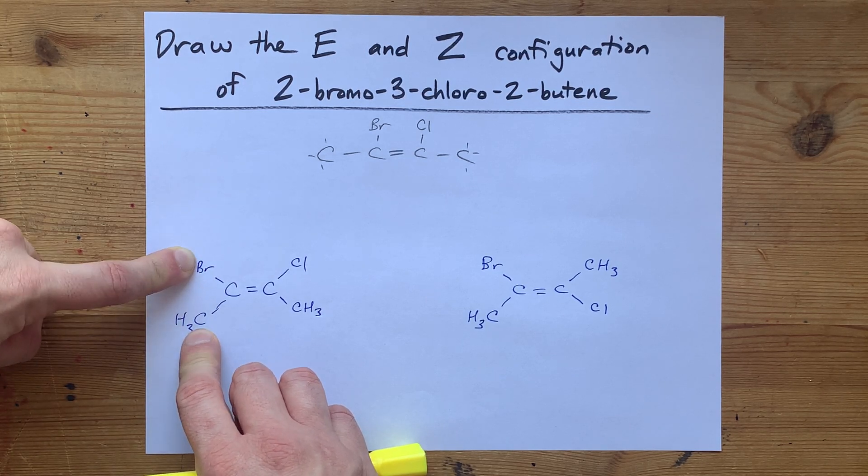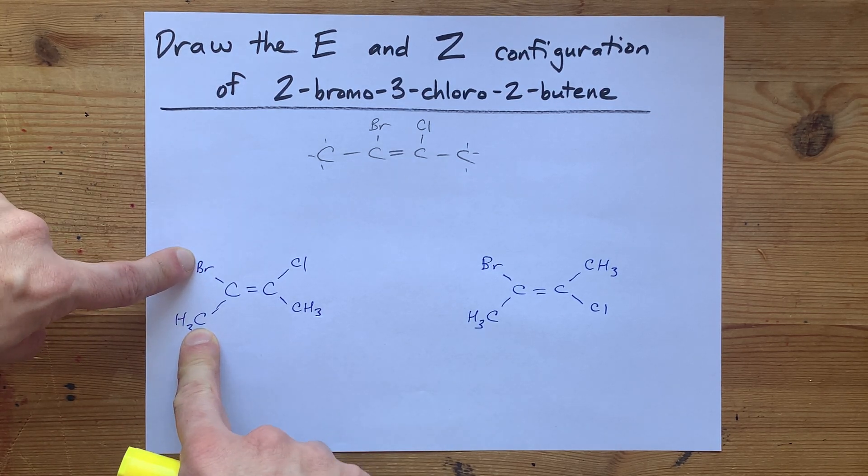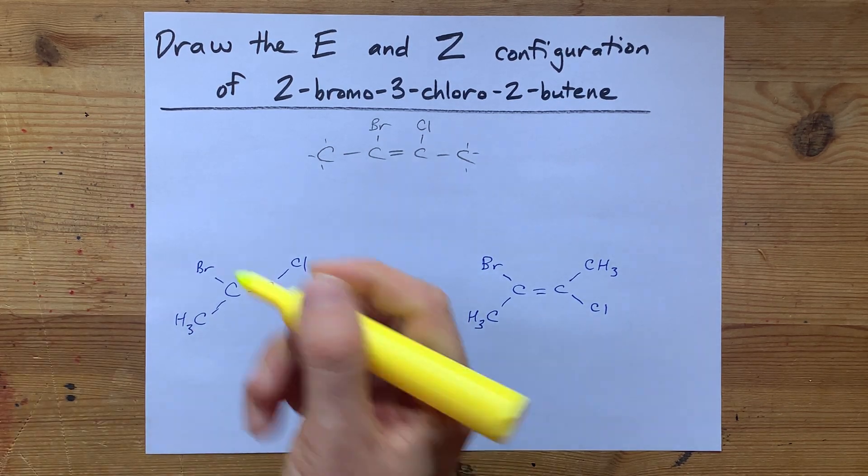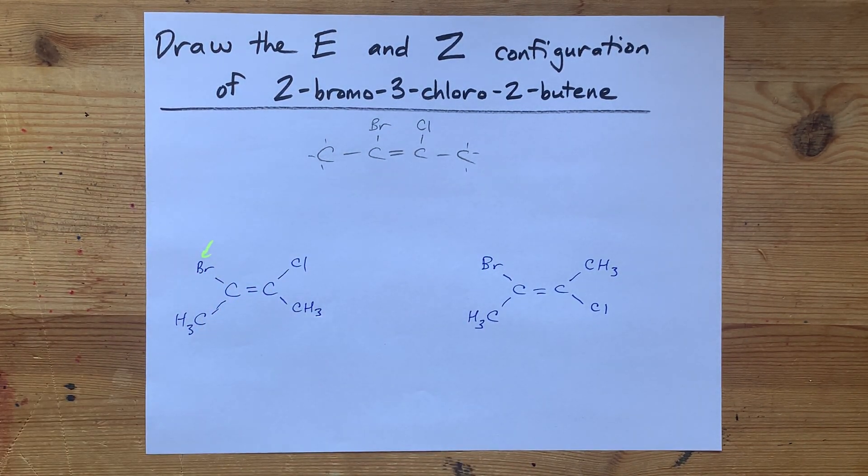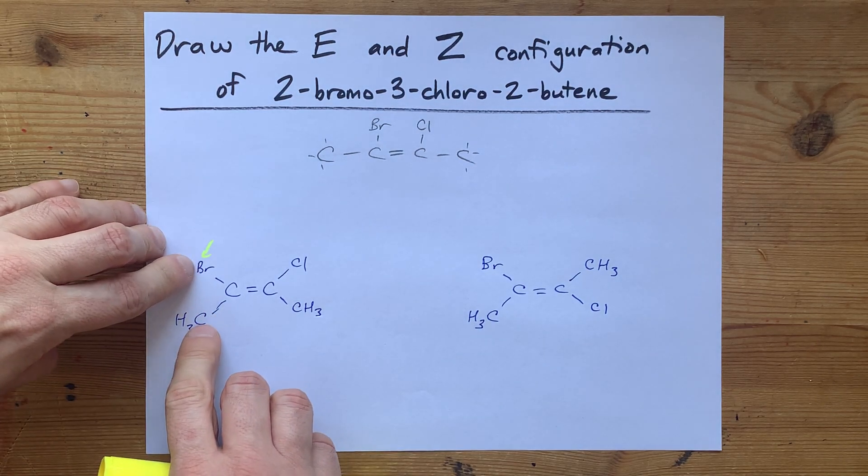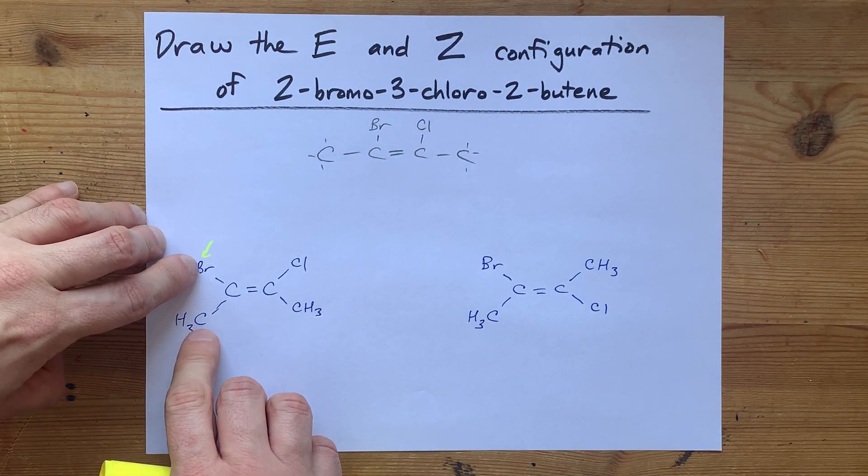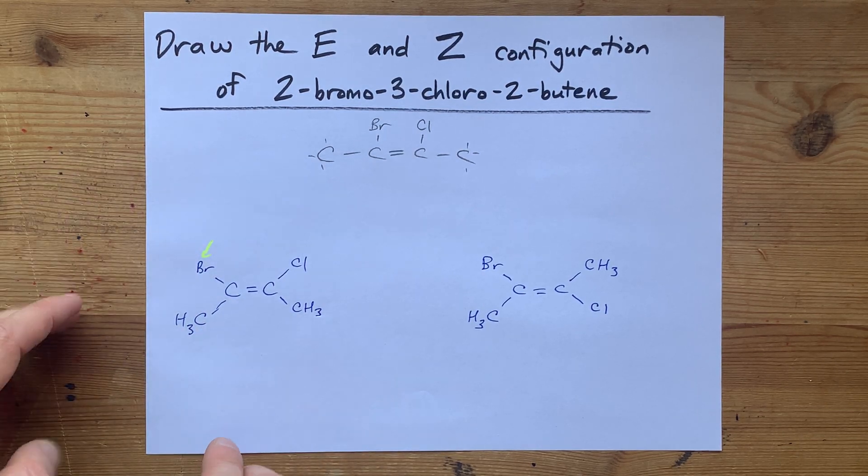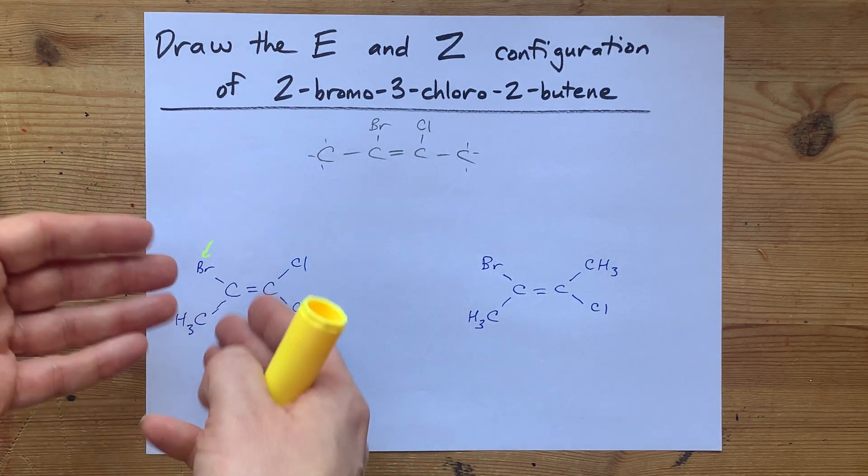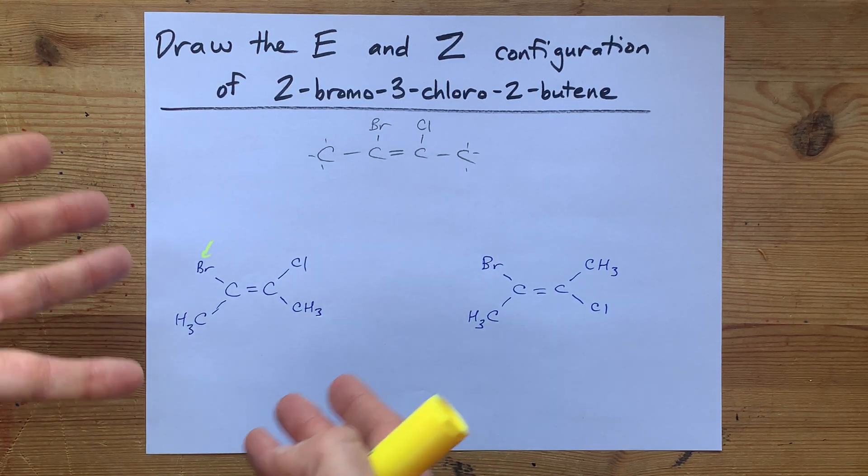If they're different, the higher atomic mass is the higher priority. So my higher priority group here is the Br. If those had been the same, then I would move on to whatever that atom is connected to, etc. But there is a difference. Br is not carbon. So we're fine.